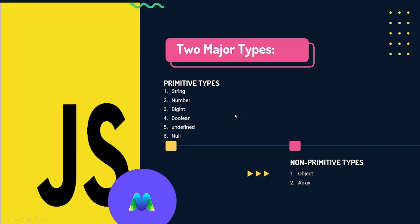Boolean means the value is either true or false — because the statement is either true or false. Undefined means there is no value assigned in the code.